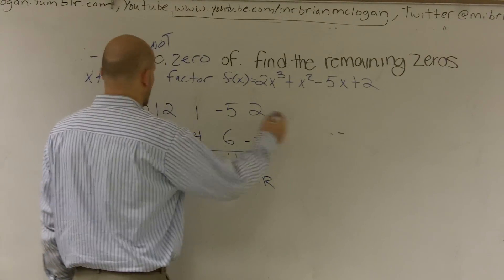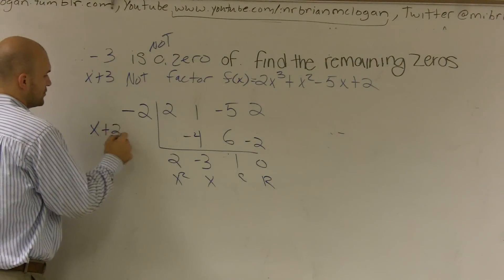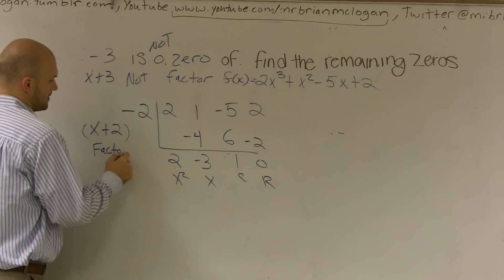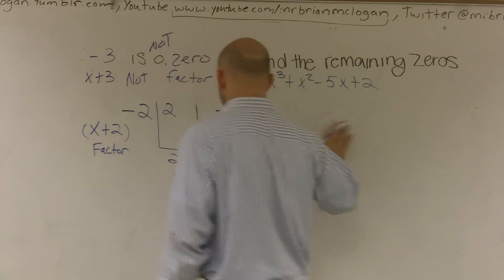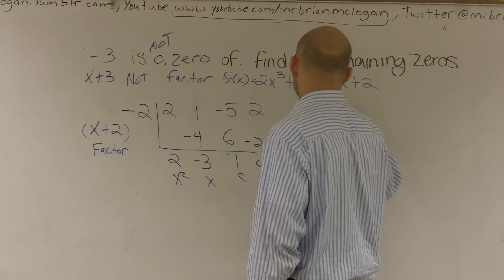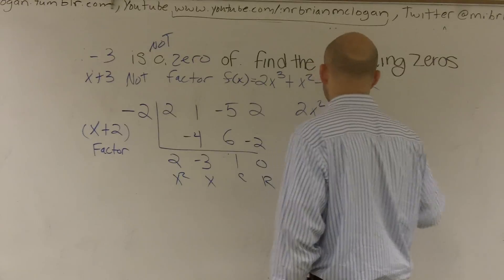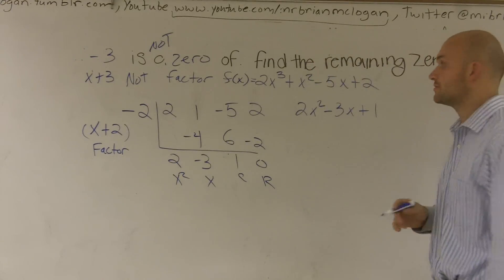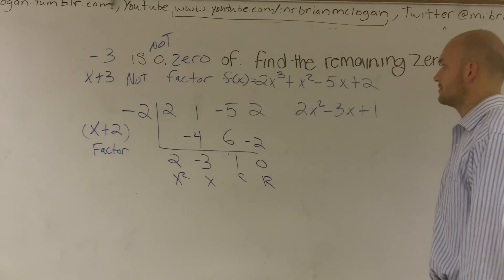So I know that x plus 2 is one factor. So therefore my remaining factor now is these are your coefficients, so it's 2x squared minus 3x plus 1. And now I need to factor this.